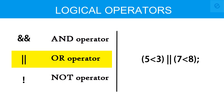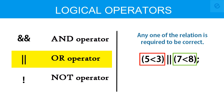Now let's talk about the logical OR operator. For the logical OR to return a true value, any one of the relations is required to be correct. It is given that five is less than three — we know that this is a false relation — but seven is less than eight is true. So the logical OR would return the value one, meaning true.